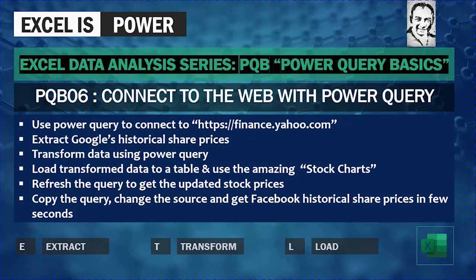Welcome to a new video from the Excel Later Analysis series, PQB or Power Query Basics. This video, PQB 06, we are going to see how we can connect to the web using Power Query. We are going to use Power Query to connect to finance.yahoo.com, extract Google's historical share prices, transform the data using the Power Query editor, and then load the transformed data to a table and use the amazing stock chart.